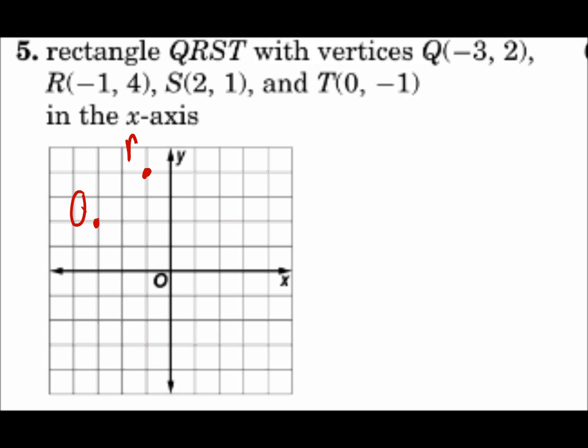R is negative 1, 4. S is 2, 1. T is 0, negative 1. Connect those dots. And now I'm reflecting in the x-axis. So the x-axis is my line of reflection. Anything that's above it goes below, and anything that's below it goes above. So R is 4 above the line. R prime is 4 below the line.